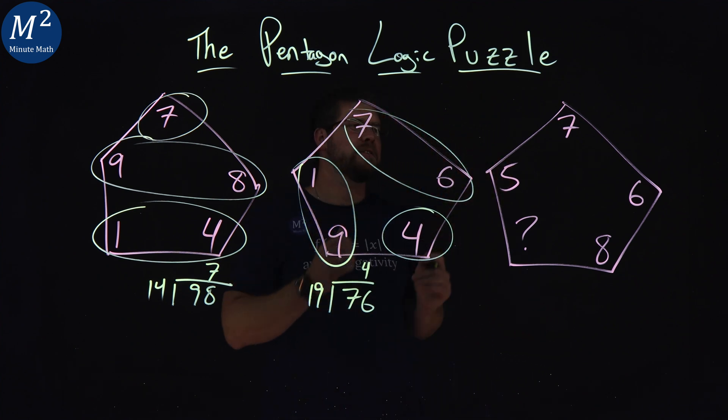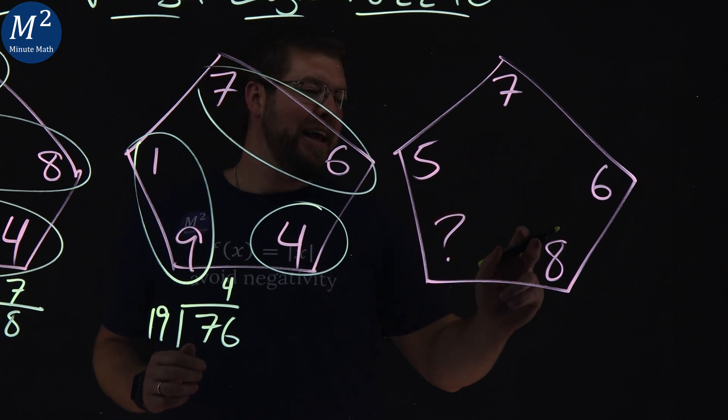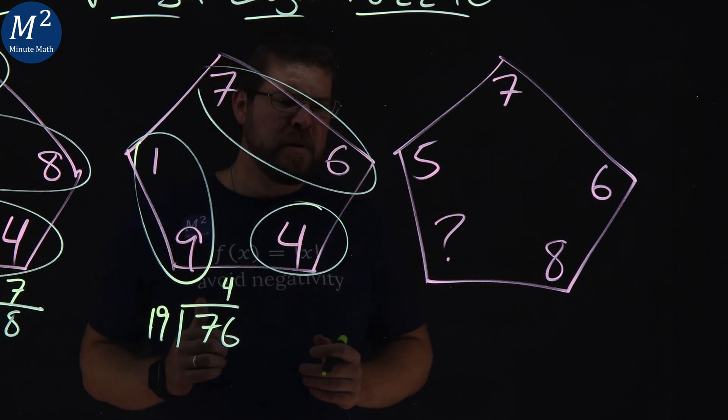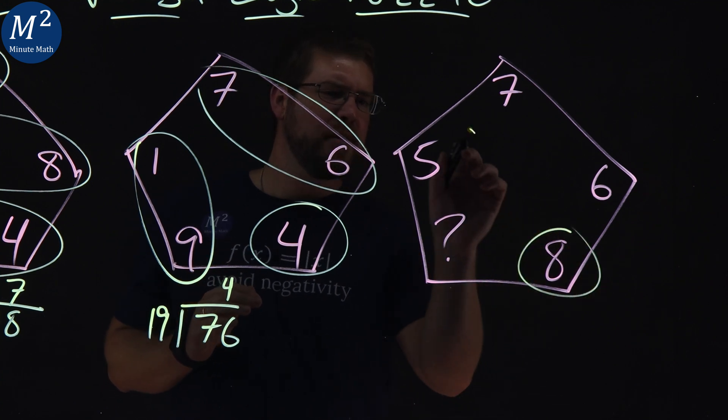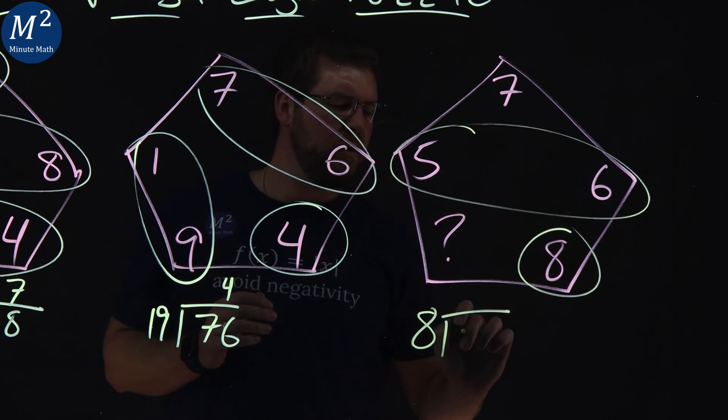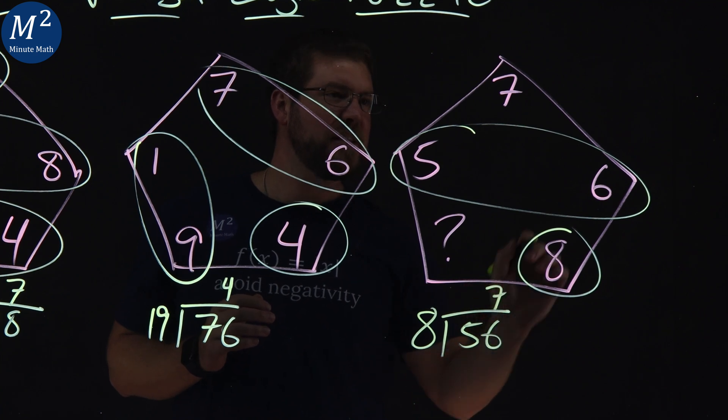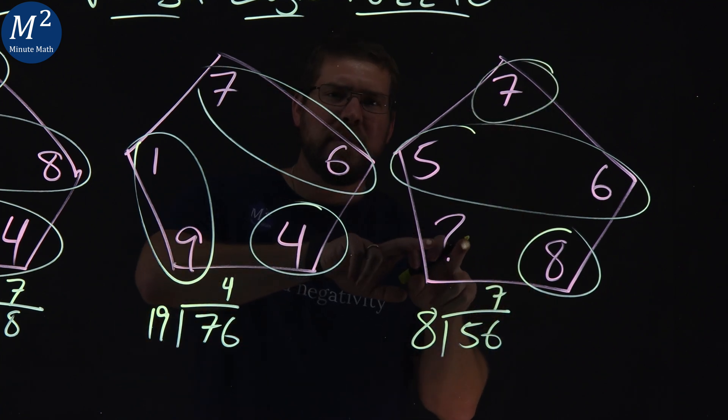All right, let's look at the last one here. We have 5, 7, 6, 8. We don't know what this number is. But right now, something is jumping out to me. 8 and 56. 8 goes into 56 seven times.